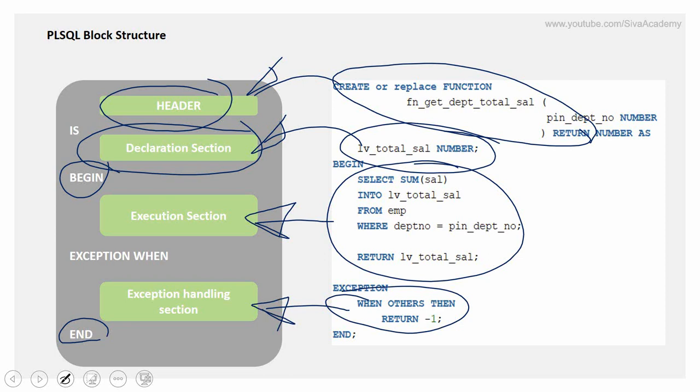We can leave the header section, and we can also leave the exception section. The execution section is mandatory. In the case of an anonymous block, we won't have a header section. The mandatory block must have at minimum a BEGIN, followed by one PL/SQL statement, followed by END. So BEGIN and END keywords are mandatory whenever we write a PL/SQL block.